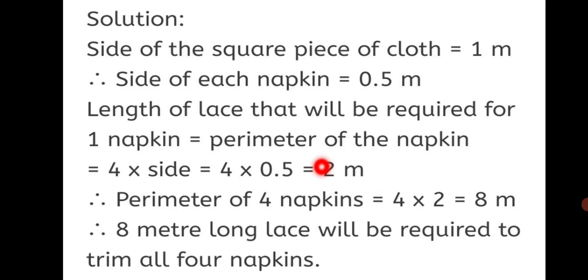One napkin requires 2 meters of lace. For all 4 napkins, the total lace required equals 4 times 2 equals 8 meters. This completes Practice Set 44, which is based on the perimeter of squares and rectangles. Write the two formulas in your notebook and practice the sums well for better understanding. Stay safe, keep learning, and thank you.